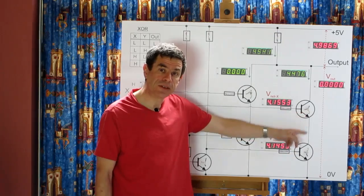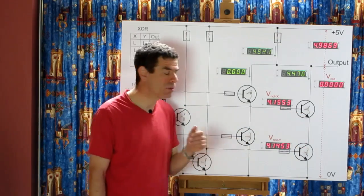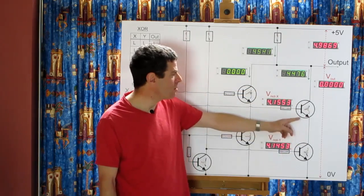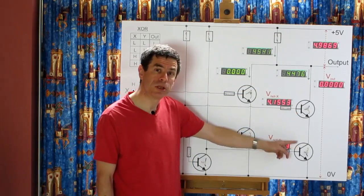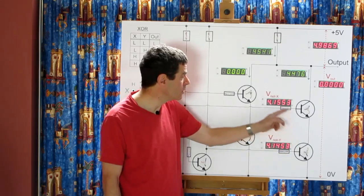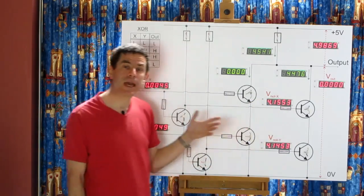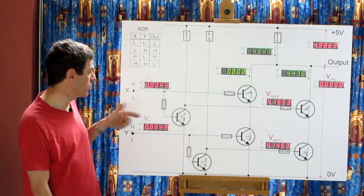This pair of transistors is in series, so it's acting as the NAND function. Current will flow down here only when the inputs to these two transistors are both high. So it's when not X is high, not Y is high, which means that X and Y are both low.